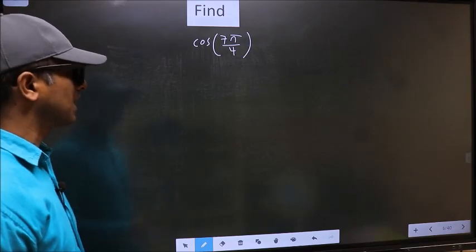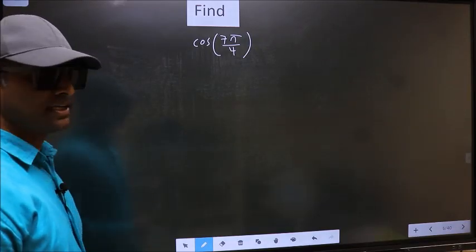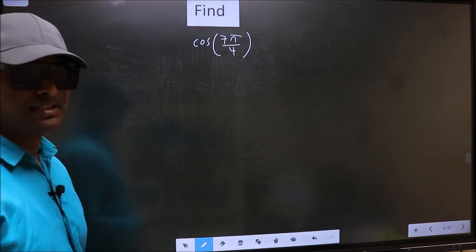Find cos 7π by 4. To find this, we should follow this method.